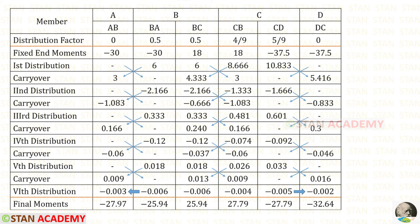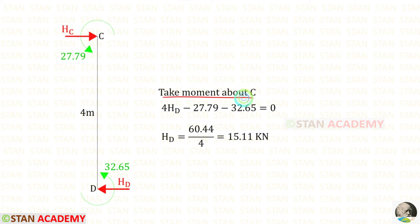Now let us take the moments in CD and DC and find the reaction in the vertical member CD. Both of these moments are negative because both are acting in the anticlockwise direction. We take moment about C and find HD. For HD we got a positive value, meaning our assumption is correct — HD is acting towards the left side.